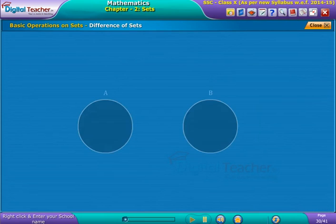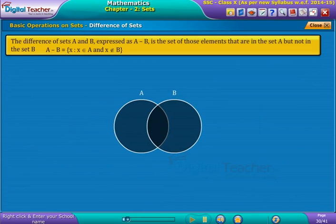Difference of sets: the difference of sets A and B, expressed as A minus B, is the set of those elements that are in the set A but not in the set B.